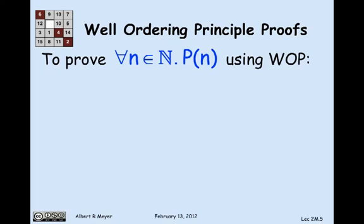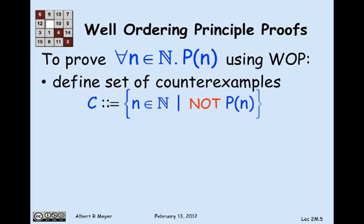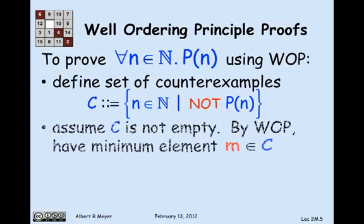And we're going to try to prove this by the well-ordering principle, which means that we're going to define the set of numbers for which p doesn't hold, that is, the set of counterexamples, and call that c. So c is the set of non-negative integers for which not p of n holds. Now, by the well-ordering principle, there's got to be a minimum element, call it m, that's in c.